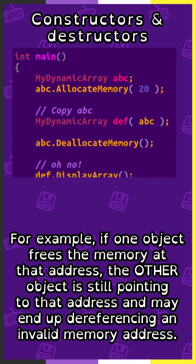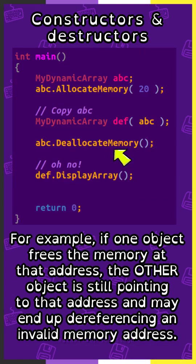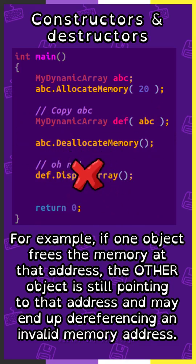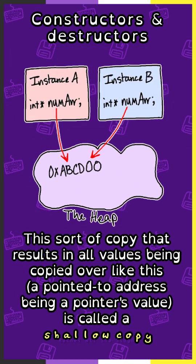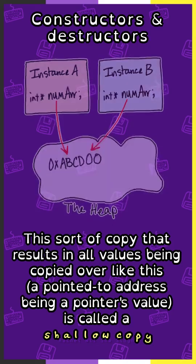For example, if one object frees the memory at that address, the other object is still pointing to that address and may end up dereferencing an invalid memory address. This sort of copy that results in values being copied over like this is called a shallow copy.